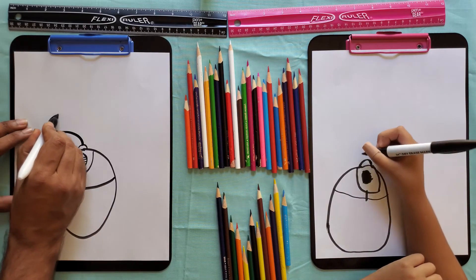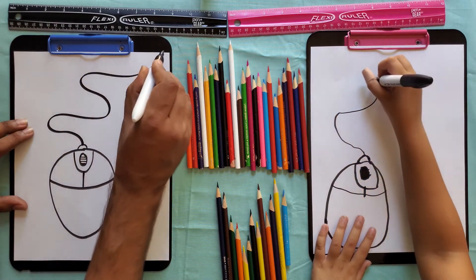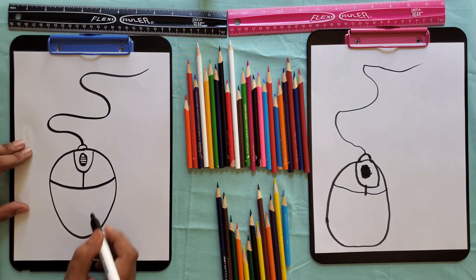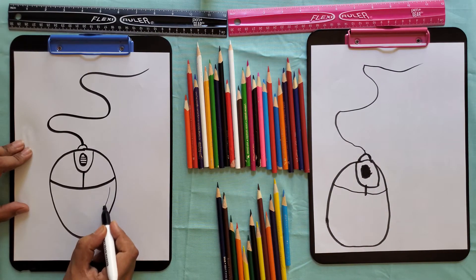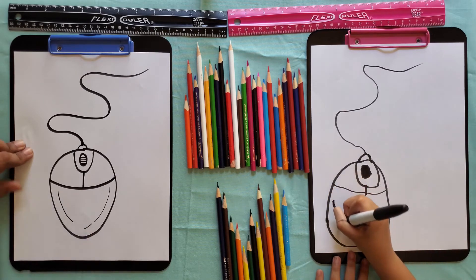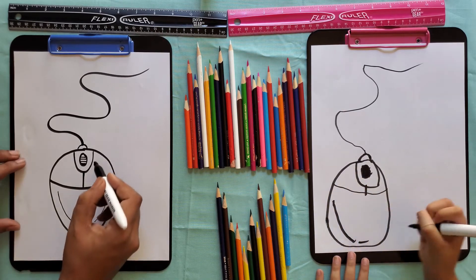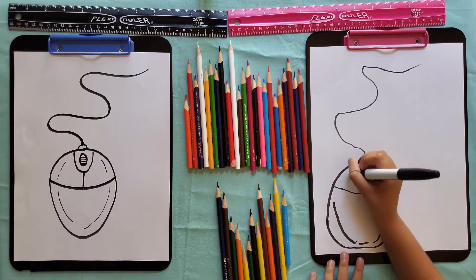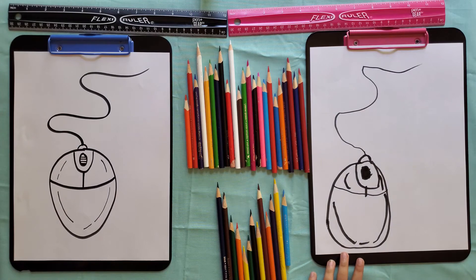Draw a wire like this. Now draw a line like this, and a line like that, and this. Then two more on these sides. We're done.